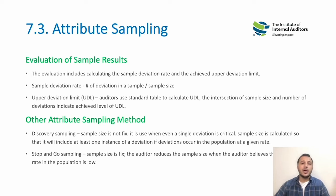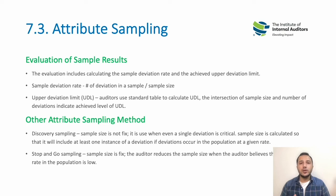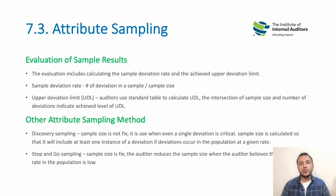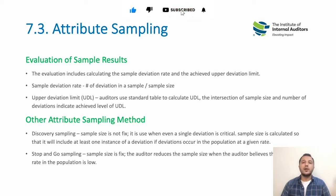Another attribute sampling method is discovery sampling. Discovery sampling is when we review the sample data until we find a single deviation, because the audit objectives we want to meet may be of a very critical nature — even one instance could lead to a major risk to the company or a major non-compliance. For example, in financial institutions, money laundering to any illegitimate person, a terrorist, or a country under embargo could pose serious issues.